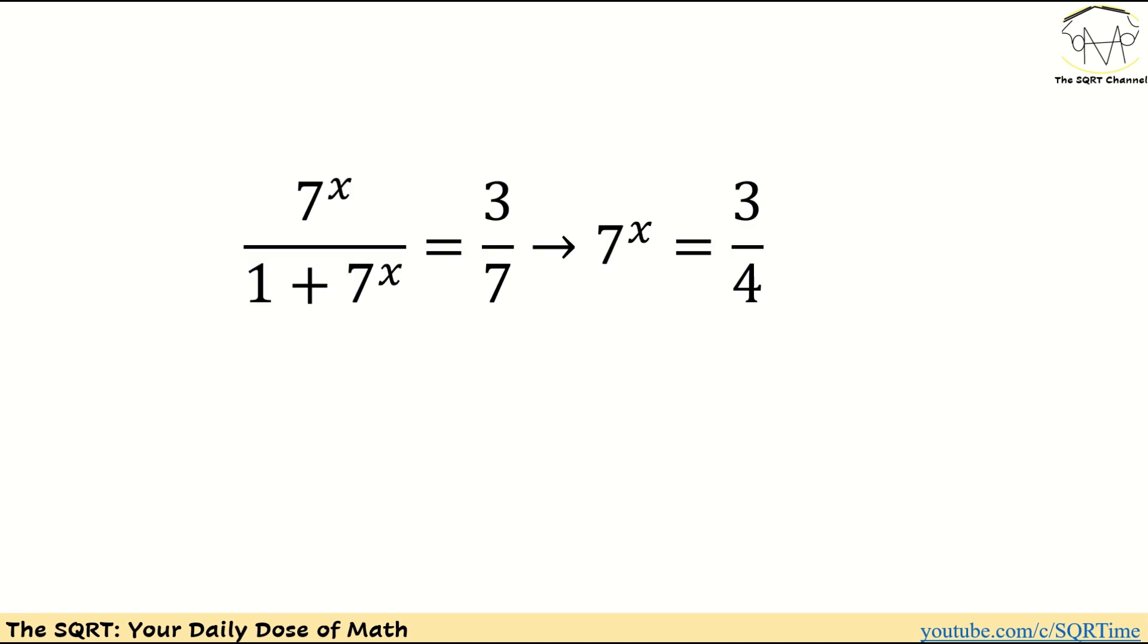First thing that I'm going to do is to simplify what we are given. We are given 7 to the power of x over 1 plus 7 to the power of x as 3 over 7.